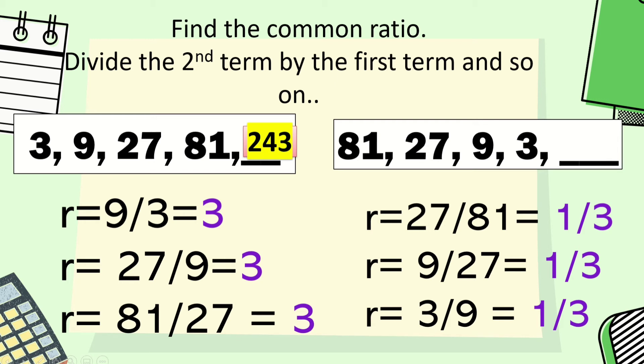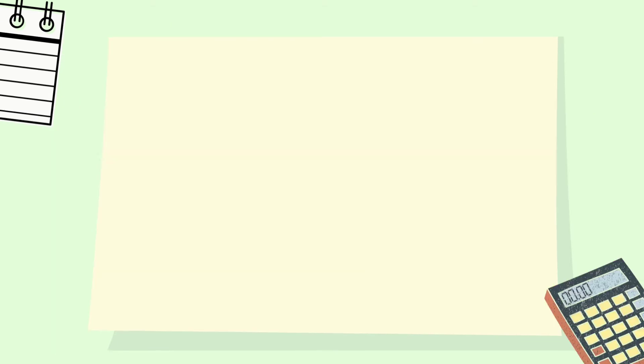To get the next term of the first example, multiply by 3 to get 243. For the second example, multiply 3 by 1 third to get 1.